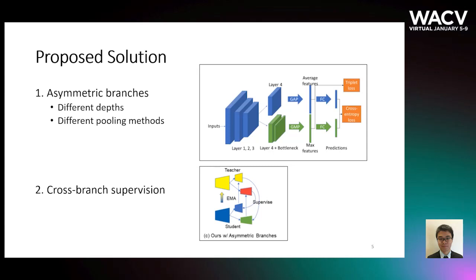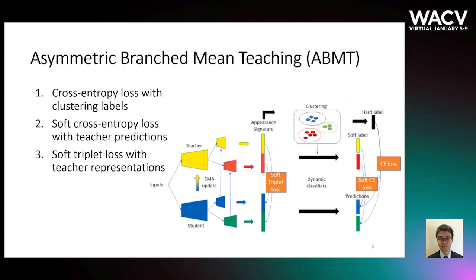To prevent two peer networks from converging to each other during training, we propose to use asymmetric branches inside neural networks. As you can see, we use two branches of different depths and pooling methods as the last convolution layer of a ResNet. Moreover, we use cross-branch supervision, which means one student branch is always supervised by a teacher branch with a different structure, following our baseline MMT.